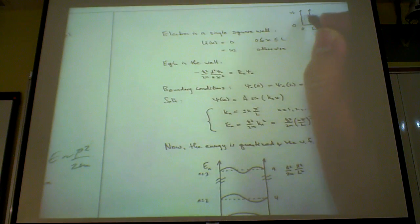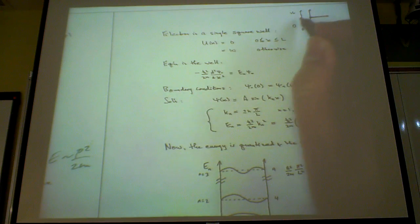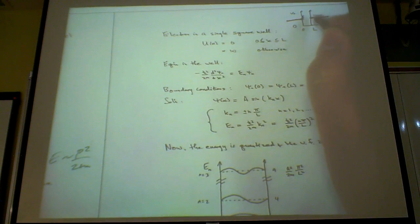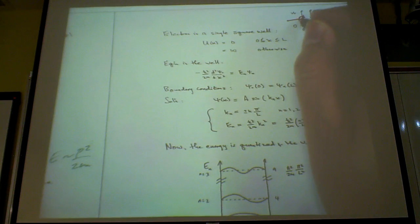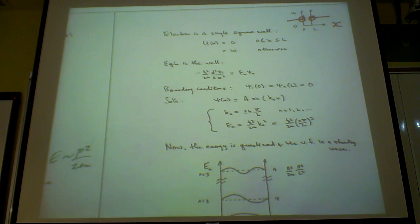You may have some wave function inside, but at the wall of the boundary, the outside must be zero. You may have a wave like this inside, but outside must be zero. So at the boundary, the wave function inside must terminate, must go to zero — otherwise it would not behave smoothly.